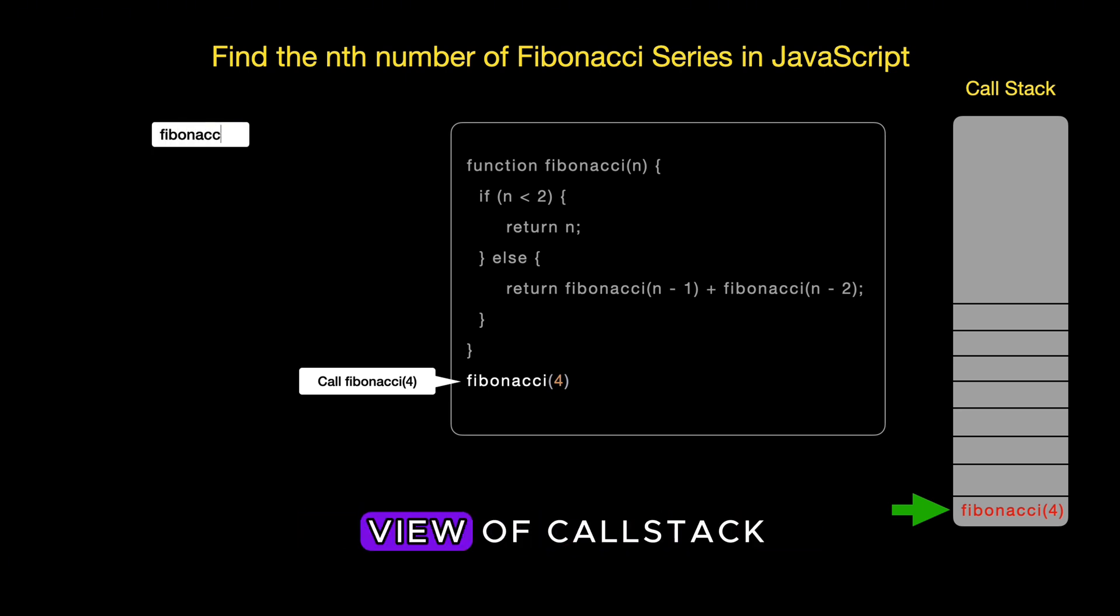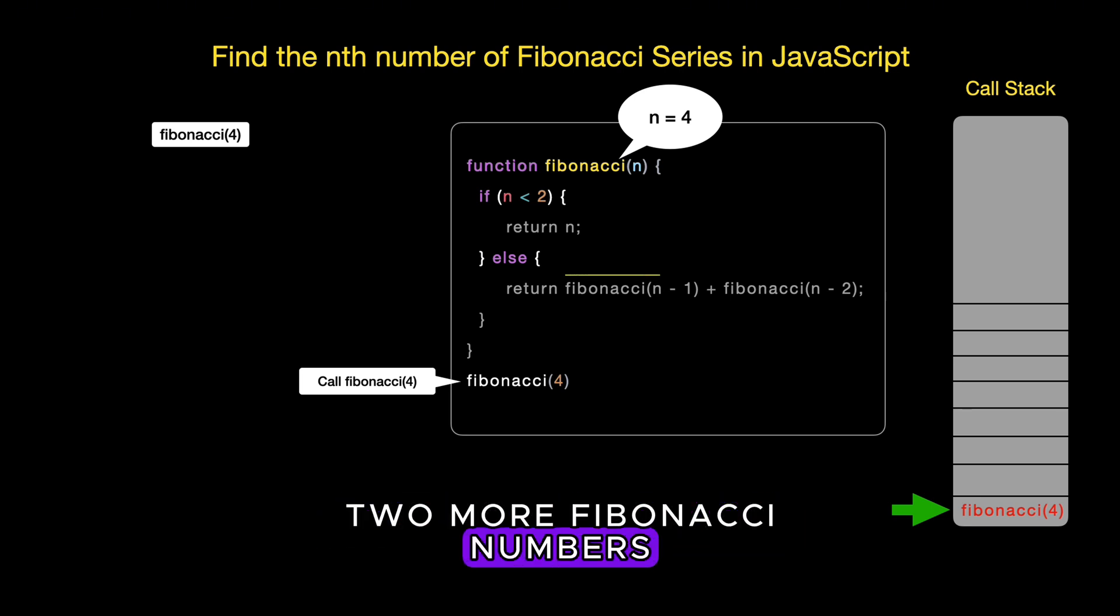On the left side, we show the tree view of call stack. Since 4 is not less than 2, the function doesn't return immediately. It needs to calculate two more Fibonacci numbers, Fibonacci 3 and Fibonacci 2.